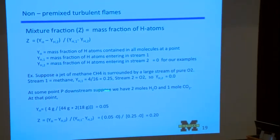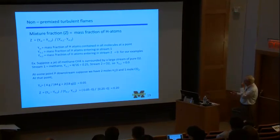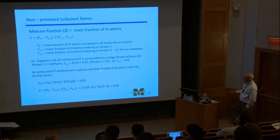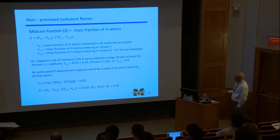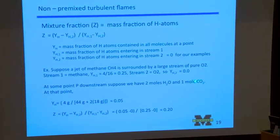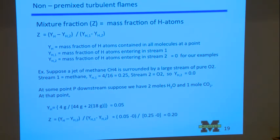So plugging that into this equation, which is a non-dimensional measure of the mass fraction of H atoms, ZH1 is 0.25. That would be this one and this one. And ZH2 is zero. But now, I said, some point downstream, we have two moles of water and one mole of CO2. So the mass fraction of H atoms of this three moles of mixture, well, we have a total of four grams from the hydrogen, but we have 44 grams for the CO2. And we have two times 18. We have two moles times 18. And so we have a total of mass given by this denominator. And so the mass fraction of H atoms in this mixture is 0.05. And so we take Z, the mixture fraction at that point, and it's going to be 0.05 divided by 0.25, which is 0.2.